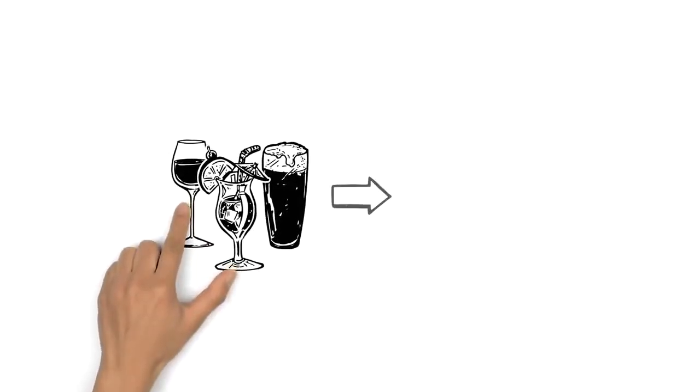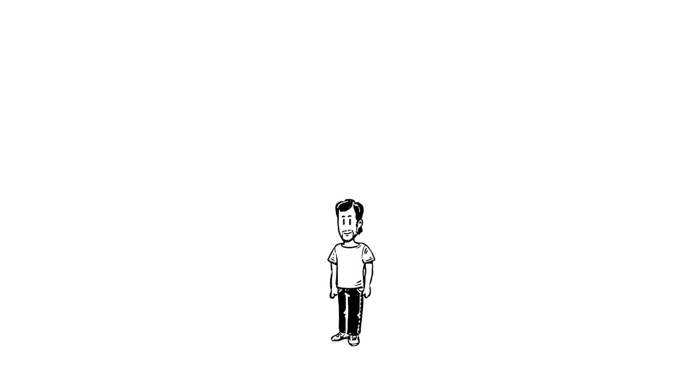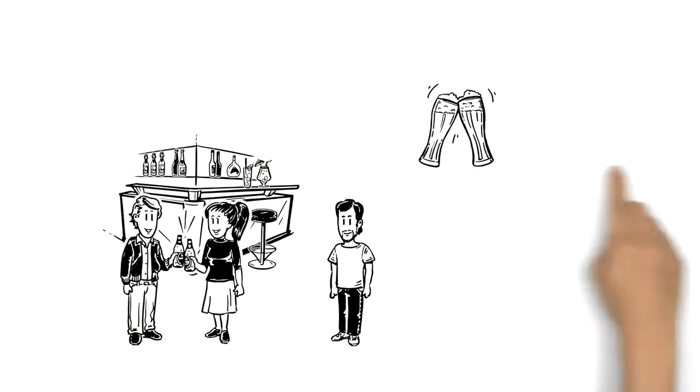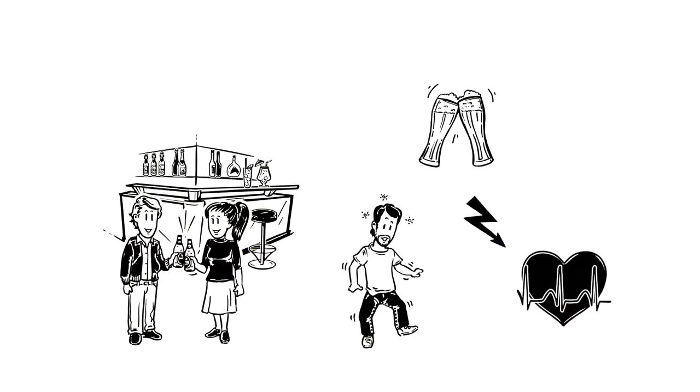We explain what alcohol does to your body. This is Michael. He enjoys going out and drinking at the weekend, sometimes a bit more than he should. He's worried that it might be affecting his health. What exactly is alcohol doing to him?